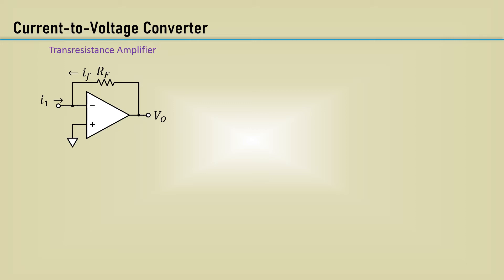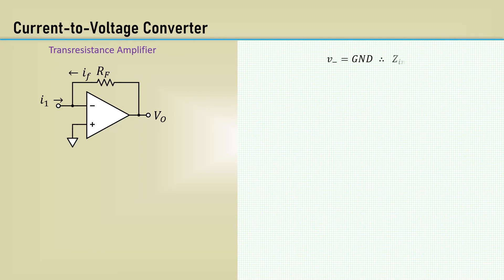It's like an inverting amplifier where the input resistor is replaced with a short. If a current is forced into I1, the output voltage will be proportional to that current. Because the V-minus terminal is a virtual ground, the input resistance is zero. I1 plus IF equals zero, so I1 equals minus IF. Since it's going through the inverting input, VO equals IF times RF. Therefore, the trans-resistance gain is given by the voltage out over input current, which equals minus RF.